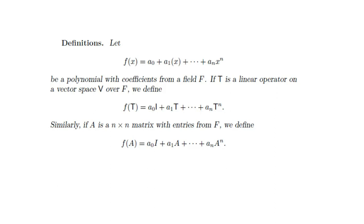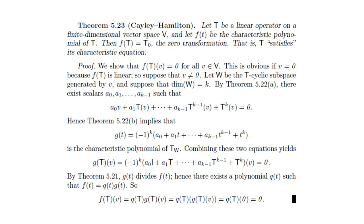Now the Cayley-Hamilton theorem says: let T be a linear operator on a finite dimensional vector space V, and let f(T) be the characteristic polynomial of T. Then f(T) is equal to the zero transformation, which brings every vector to zero. That is, T satisfies its characteristic equation.